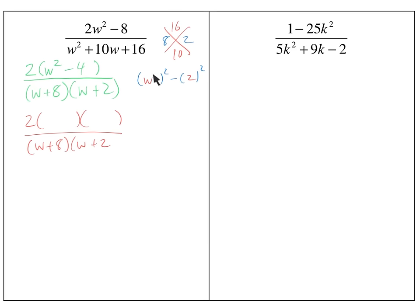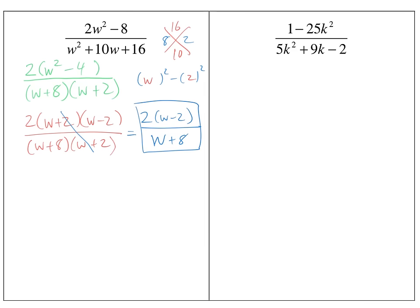If you have a difference of squares, you should remember it factors into two pieces: one with a plus and one with a minus. So it's going to be (W + 2)(W - 2). Now hopefully you see something dropping out — something that eliminates because it creates a 1. Those (W + 2) terms drop out, leaving 2(W - 2) on top and (W + 8) on the bottom. That is my simplified form.